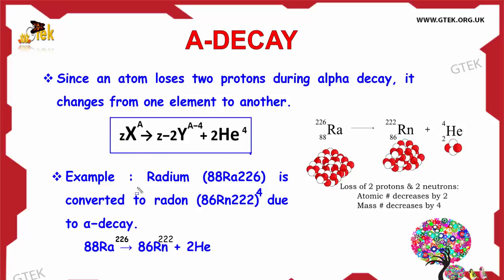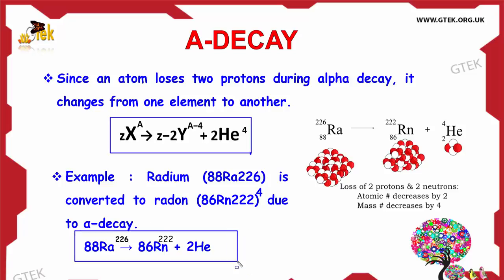Z and A specify the atomic number and mass number values. For example, Radium-226 (atomic number 88) is converted to Radon-222 (atomic number 86) plus a Helium-4 atom due to Alpha decay.